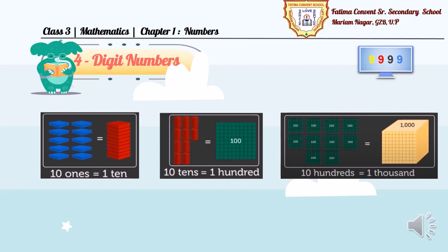There are 10 blocks of ones that make 1 block of 10. Similarly, 10 tens make 1 hundred. That is, 10 blocks of tens make 1 block of 100. In the same way, 10 hundreds make 1 thousand. So it is very clear that 10 hundreds, we have 10 blocks of hundreds, makes 1 block of 1 thousand.